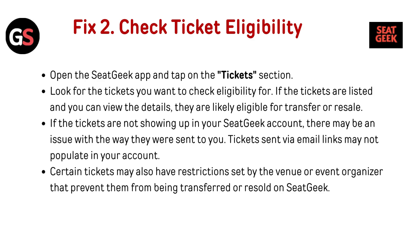Fix 2: Check ticket eligibility. Open the SeedGeek app and tap on the tickets section. Look for the tickets you want to check eligibility for. If the tickets are listed and you can view the details, they are likely eligible for transfer or resale. If the tickets are not showing up in your SeedGeek account, there may be an issue with the way they were sent to you. Tickets sent via email links may not populate in your account.